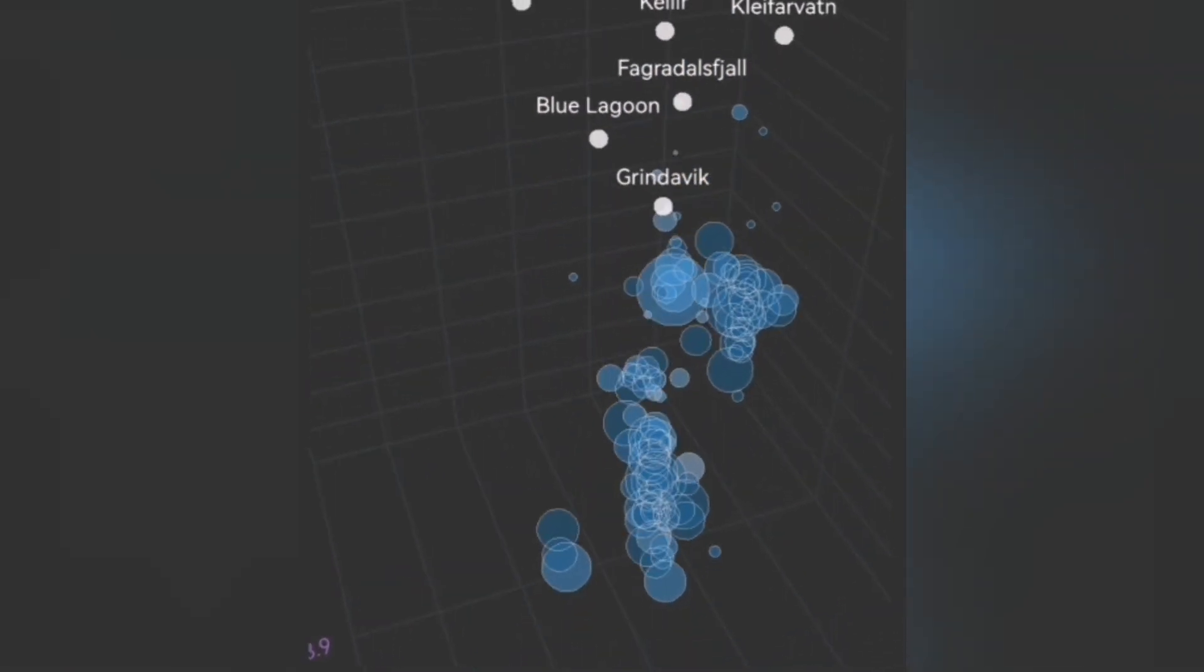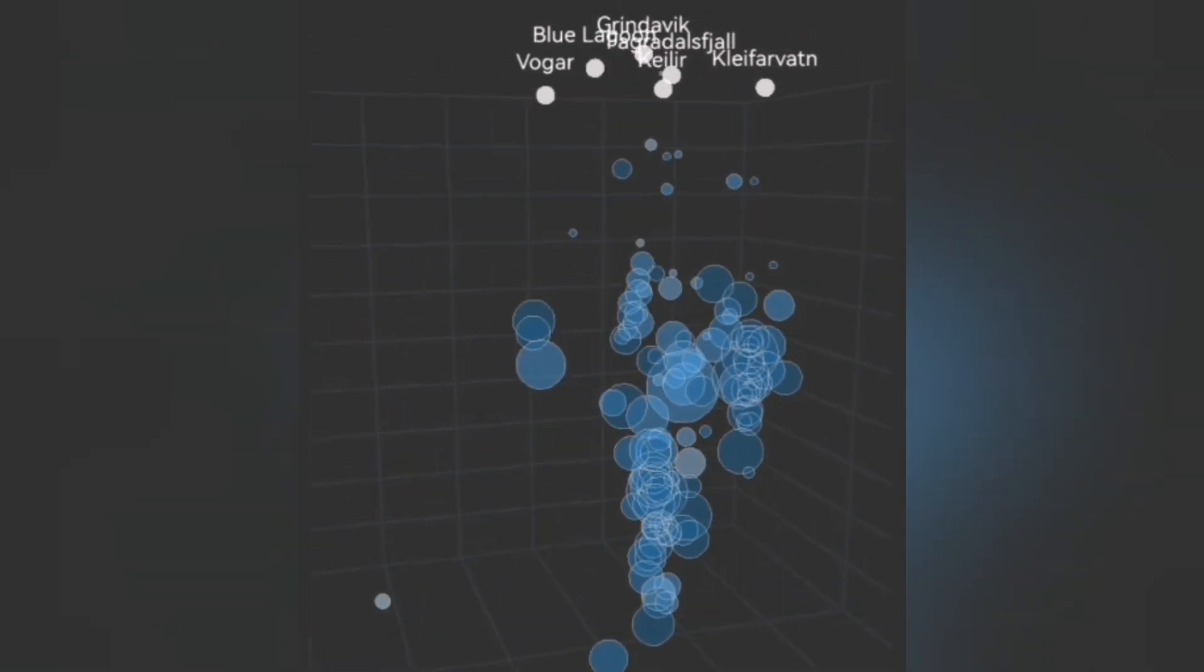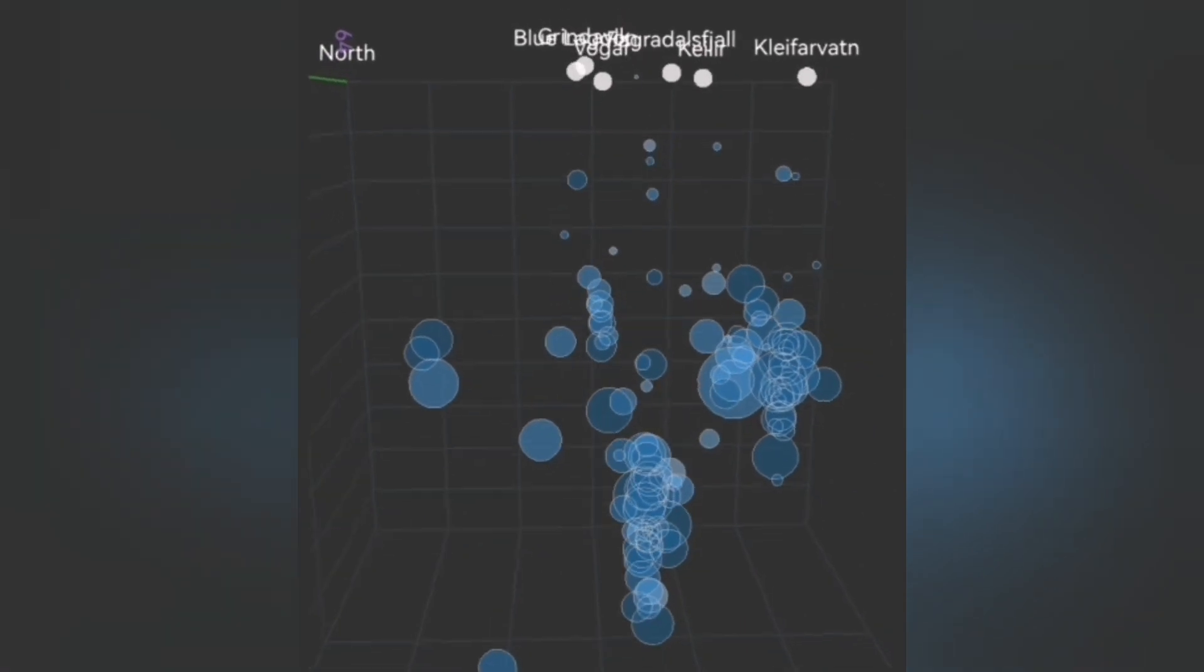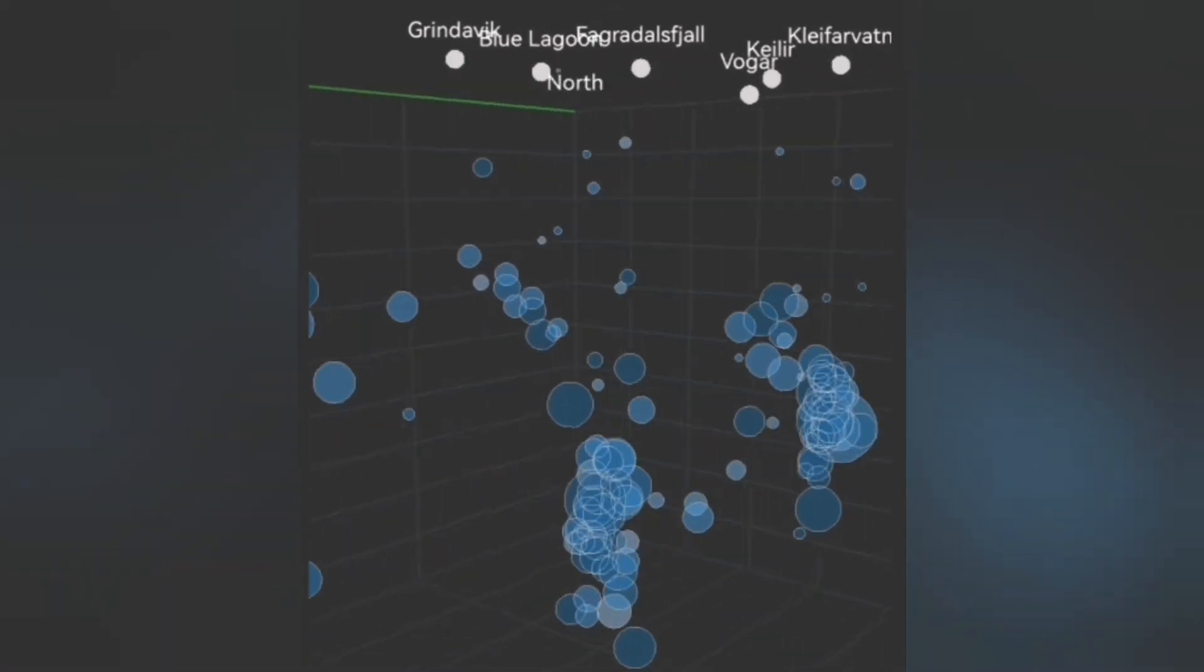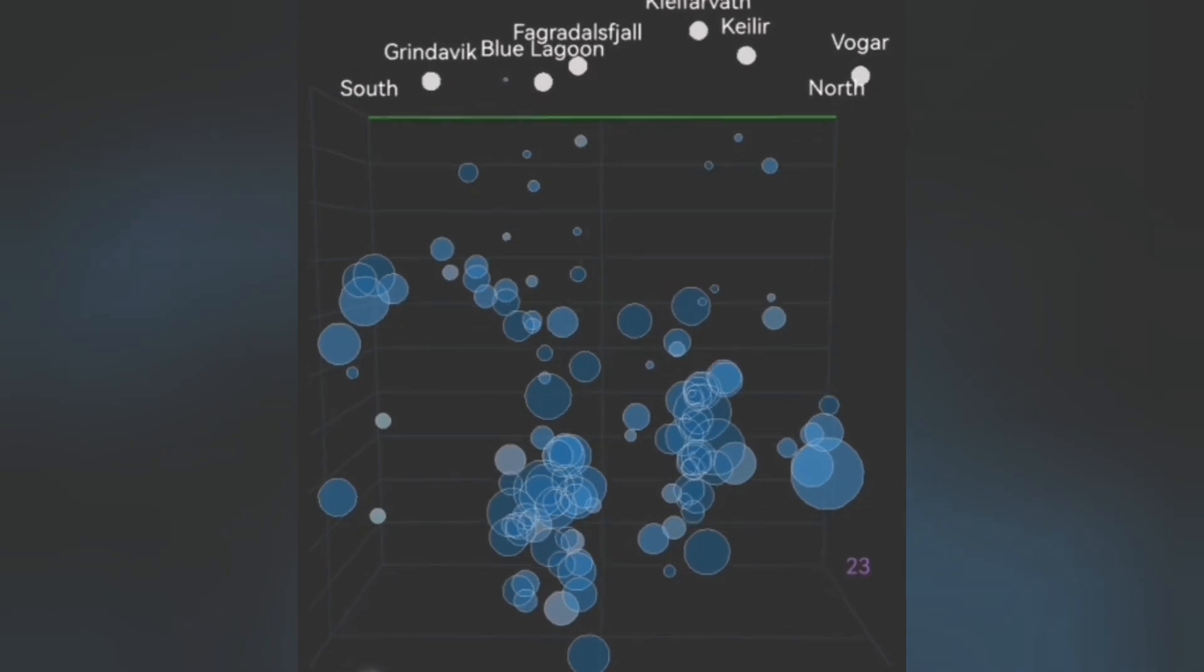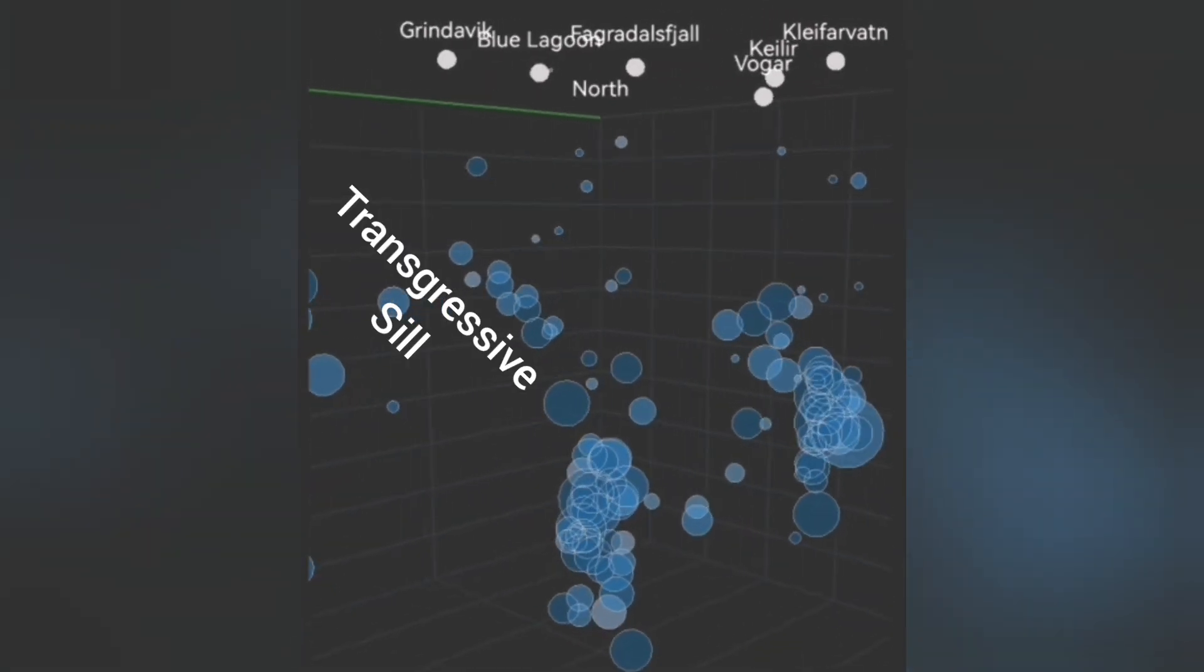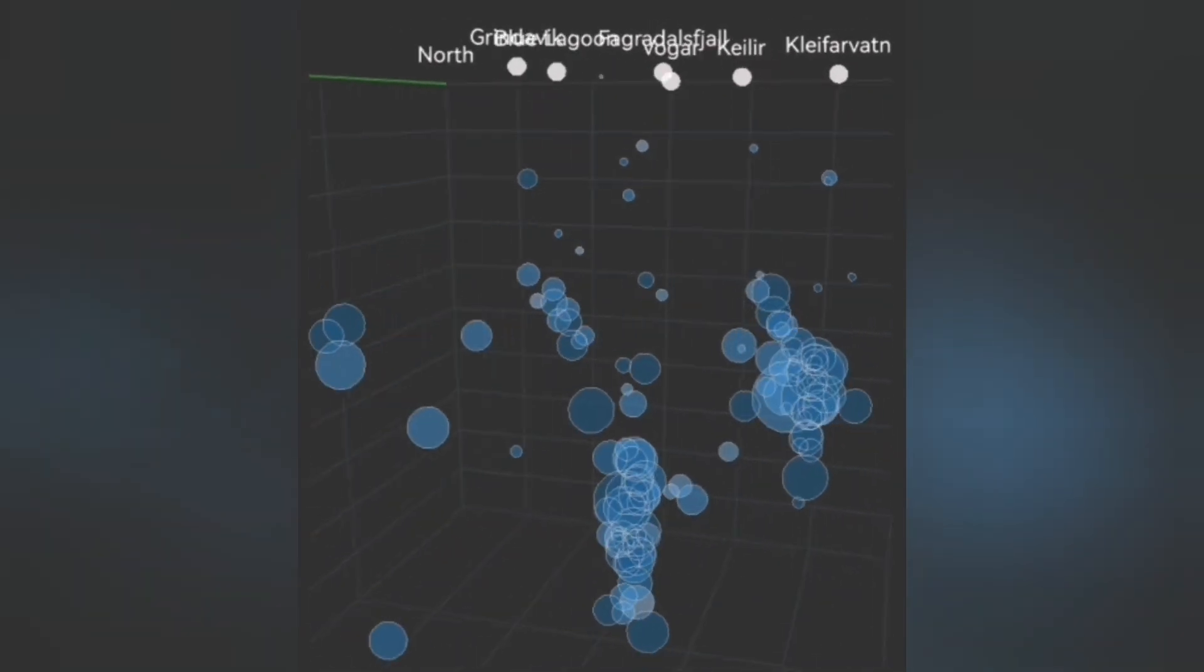For example, when I look at the earthquake depth chart, you can see a tongue of earthquakes at an angle moving from what is practically under Svartsengi toward Grindavik. We call it transgressive seal in geological term.